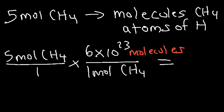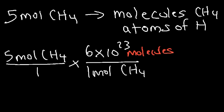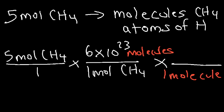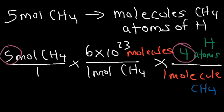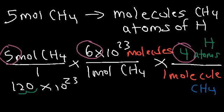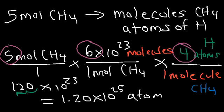Now for the second part: converting molecules of CH4 into atoms of hydrogen. One molecule of CH4 contains four atoms of hydrogen, so we multiply our answer by 4. Five times 4 is 20, and 20 times 6 is 120, giving 120 times 10 to the 23. Moving the decimal two units to the left, this equals 1.2 times 10 to the 25 atoms of hydrogen. Sometimes you need an extra step to go from molecules to atoms.